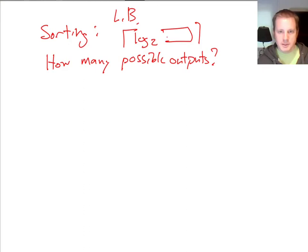Now let's put in the one ingredient we need to also get a lower bound on sorting. The one additional ingredient we need for sorting is to answer: how many possible outputs are there? We know our lower bound is going to be something like ceiling of log base 2 of something, because we're doing comparison-based sorting — that's where the 2 comes from. This is the general form of what's called an information theoretic lower bound. But the question is: what goes in this box? How many different possible outputs are there from sorting?